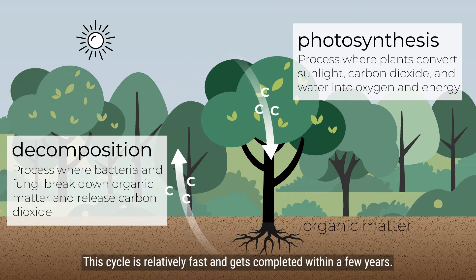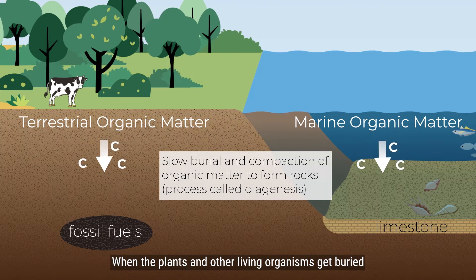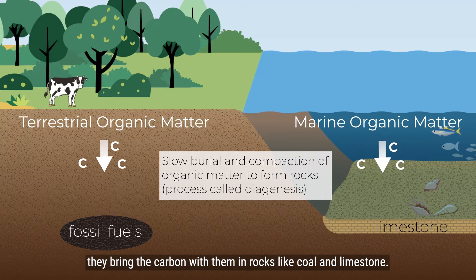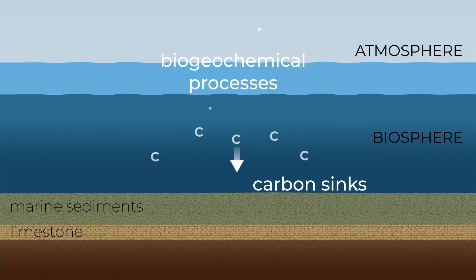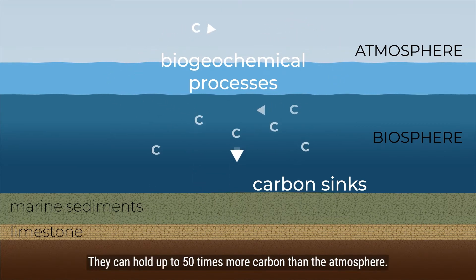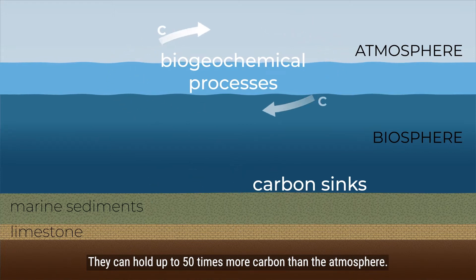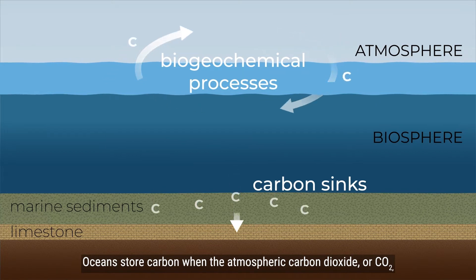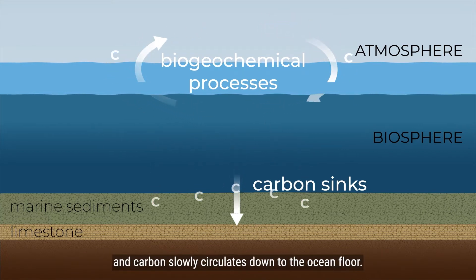This cycle is relatively fast and gets completed within a few years. When plants and other living organisms get buried and compacted over millions of years, they bring the carbon with them into rocks like coal and limestone. Our oceans are major carbon sinks — they can hold up to 50 times more carbon than the atmosphere. Oceans store carbon when atmospheric CO2 dissolves at the ocean surface and slowly circulates down to the ocean floor.